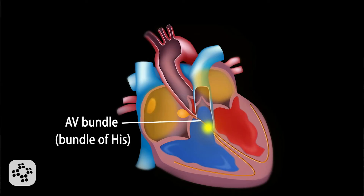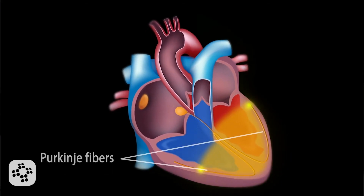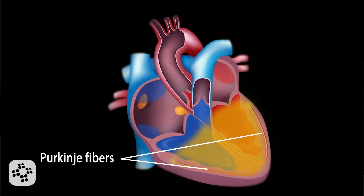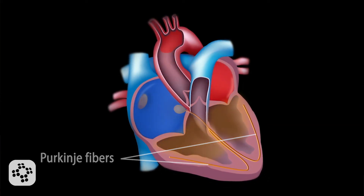After the impulse reaches the bundle of His, it travels down the length of the interventricular septum and leads to the left and right bundle branches. The left bundle branch has two fascicles because the left ventricle is larger than the right ventricle. These bundle branches terminate into the Purkinje fibers, which depolarize the ventricular cells and cause the ventricular muscles to contract.